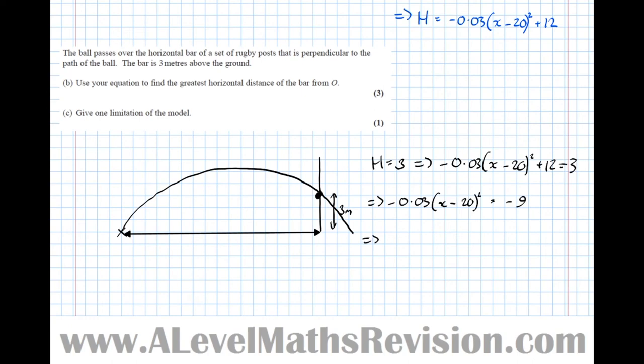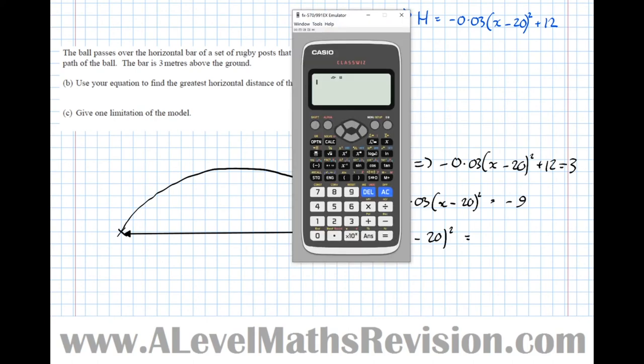So dividing both sides now by minus 0.03, we get x minus 20 squared equals, and minus 9 divided by minus 0.03 we'll do in the calculator. So minus 9 divided by minus 0.03, which is 300.